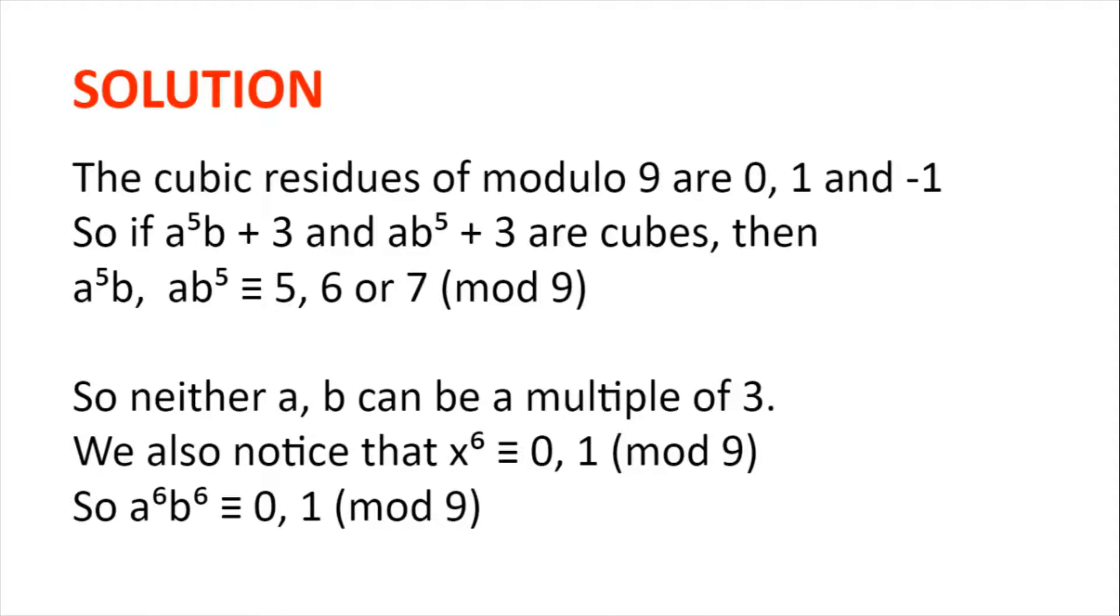This also means that neither a nor b could be a multiple of 3, because a multiple of 3 to the power of 5 gives a multiple of 9. We can also notice that x to the power of 6 is congruent to 0 or 1 modulo 9.